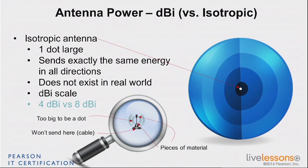Of course, the isotropic doesn't exist, but you know that one of them is twice as powerful as the other, right? No, it's not — because it has 4 dB. Remember? Twice is 3 dB. That was the trap. 3 dB is twice. So if you go from 4 dBi to 7 dBi, that would have been twice as powerful. But because you go to 8, it's more than twice. And that's where you would need an online tool to exactly calculate 4 dB — how much that is.